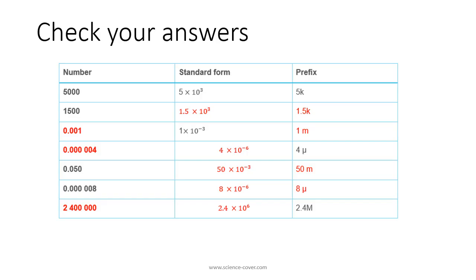Let's check our answers to the do now task. 1500 can be written as 1.5 times 10 to the power of 3, or 1.5 kilo. 1 times 10 to the minus 3 can be written as 1 milli or 0.001. 4 micro is 4 times 10 to the minus 6 in standard form, which is 0.0004.